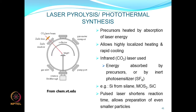Laser pyrolysis takes a precursor heated by laser impaction on the surface, allowing localized heating and rapid cooling. The difference from thermal methods is that in a thermal method the whole material evaporates, whereas with a laser vaporization happens from localized areas. Using an infrared CO2 laser, you can make silicon from silane. Pulsed laser is a variation that can shorten reaction times and allow preparation of even finer particles.